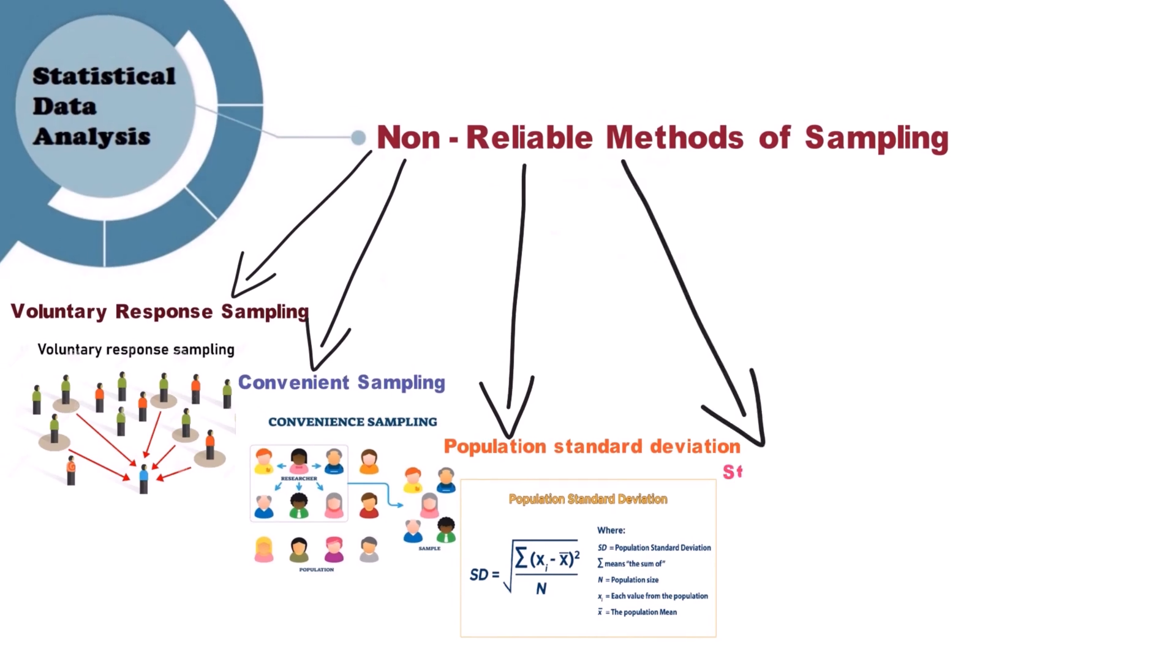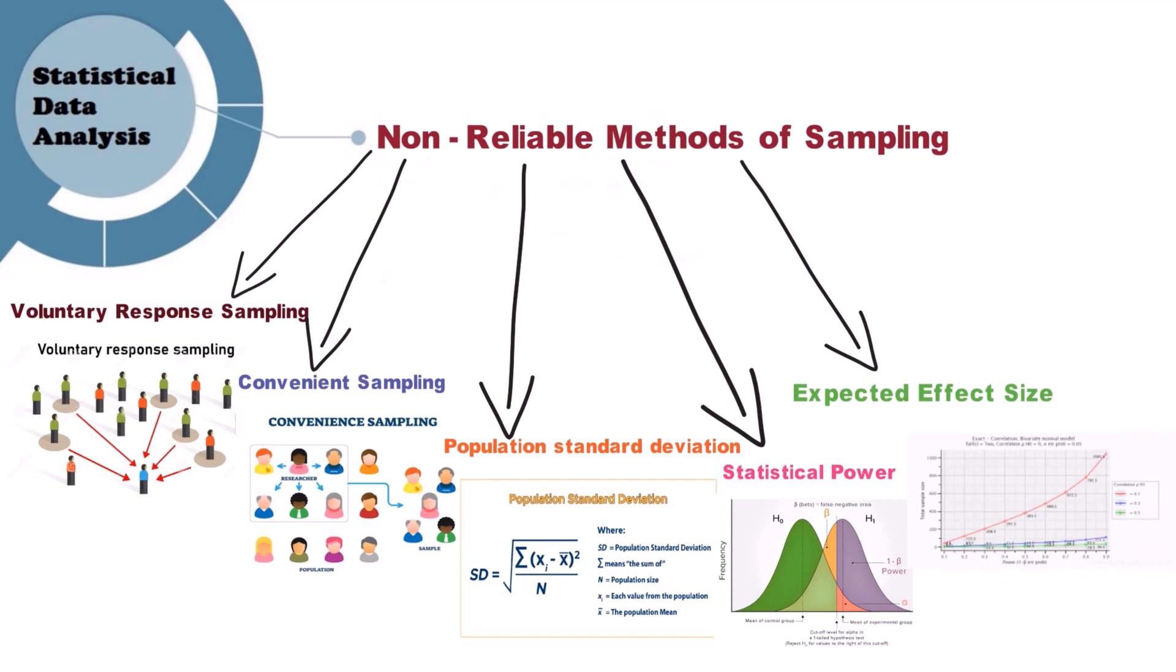Expected effect size: It is an indication of how large the expected findings of your research be. Significance level alpha: It is the risk of rejecting a true null hypothesis.